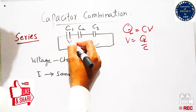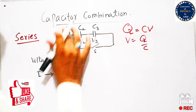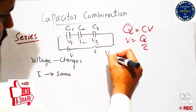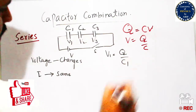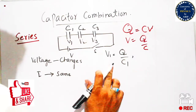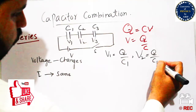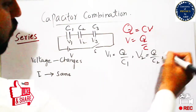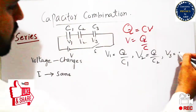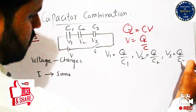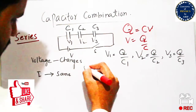The voltage across C1 is V1, the voltage across C2 is V2, and the voltage across C3 is V3. So V1 = Q/C1. Since current remains the same in series, charge also remains the same across all capacitors. Therefore V2 = Q/C2 and V3 = Q/C3. To find the total equivalent capacitance, all the individual voltages will be added together.